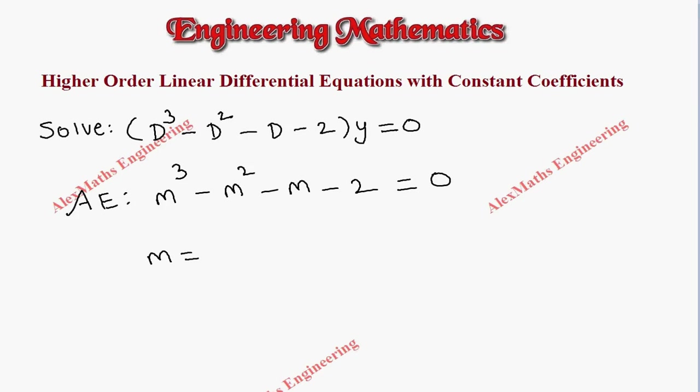One value is m = 2, and the other two values are complex roots: -1/2 ± i√3/2. This is of the form α ± iβ. By comparison, we get α = -1/2 and β = √3/2.